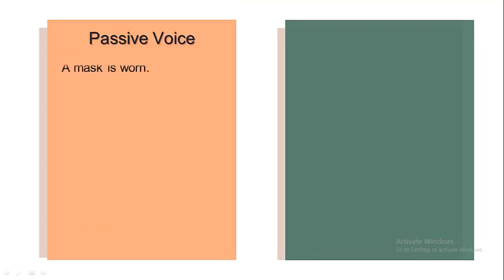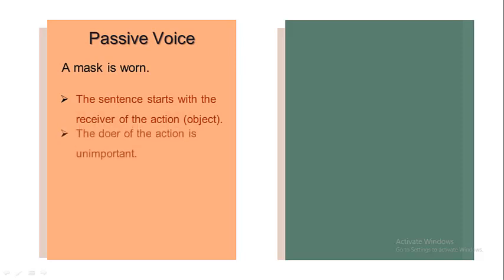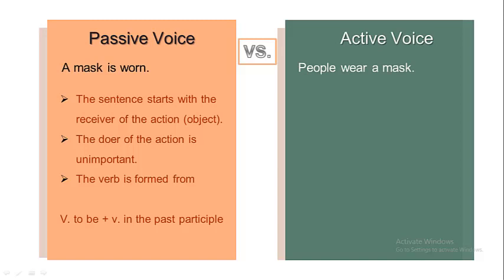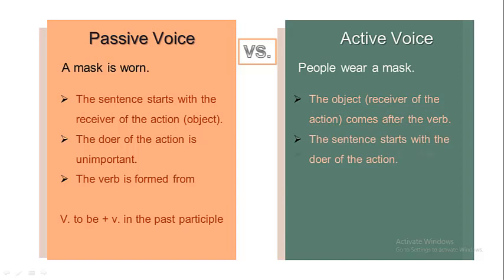Let's see together. The first group is written in the passive voice. Let's take an example: a mask is worn. We see that this sentence started with the receiver of the action, which is the object. The doer of the action is unimportant as we didn't mention it. And the verb is formed from the verb to be plus the verb in the past participle. While in the second group, they were written in the active voice. For example: people wear a mask. In the active voice, the object — which is the receiver of the action — comes after the verb in its normal position, the sentence starts with the doer of the action, and the verb is formed in the simple present tense.